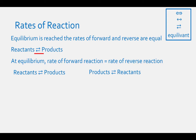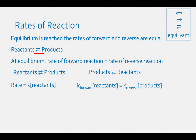Rate equals a constant times the concentration of the reactant. So the forward rate constant times the concentration of the reactants equals the reverse rate constant times the concentration of the products. We can rearrange the equation so that the rate constant of the forward reaction divided by the rate constant of the reverse reaction equals the concentration of the products divided by the concentration of the reactants.